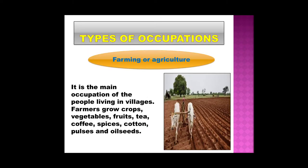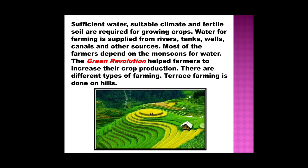Types of occupation. First, farming or agriculture. We are going to know about the farmers, the Indian farmers. It is the main occupation of the people living in villages. Farmers grow crops, vegetables, fruits, tea, coffee, spices, cotton, pulses and oilseeds. All the food crops that we get are supplied by the farmers. If farmers were not there, we would not get any food grains. Sufficient water, suitable climate and fertile soil are required for growing crops. Water for farming is supplied from rivers, tanks, wells, canals and other sources.